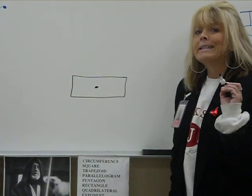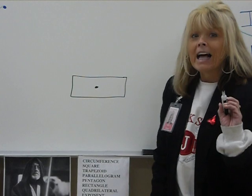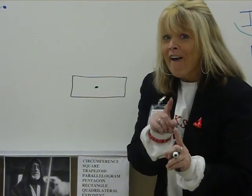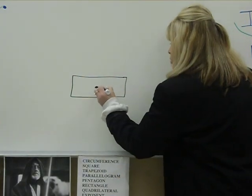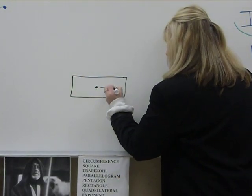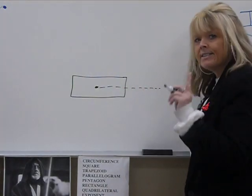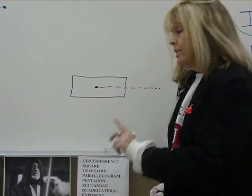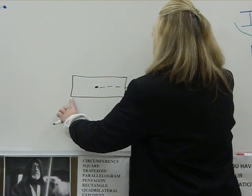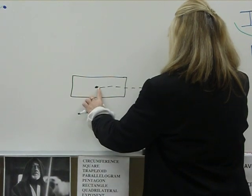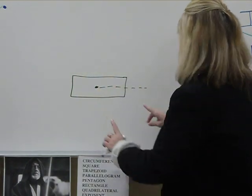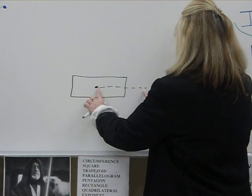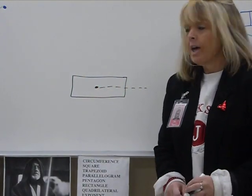Then you draw a dotted line from the dot to the right, the same length as the rectangle. That's not perfect, but it's okay.